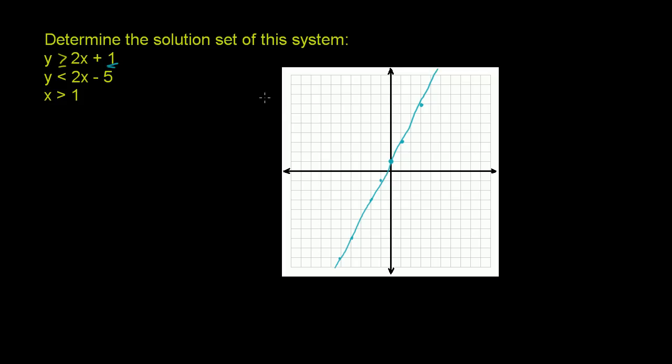That's the graph of y equals 2x plus 1. Now for y is greater than or equal, we have to put all the region above this. For any x, 2x plus 1 will be right on that line, but all the y's greater than that are also valid. So the solution set of that first equation is all of this area up here, all of the area above the line, including the line, because it's greater than or equal to.